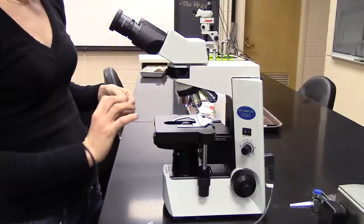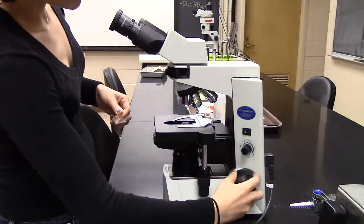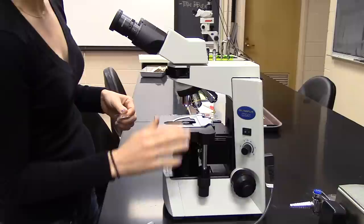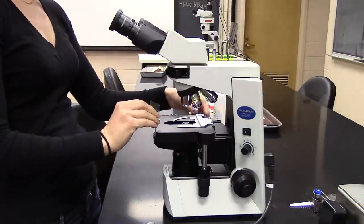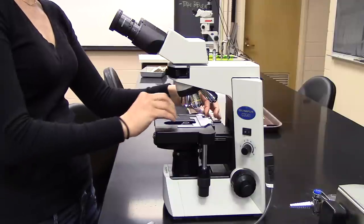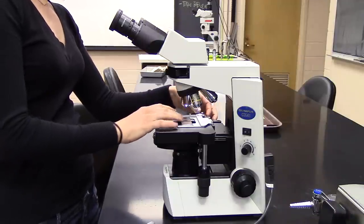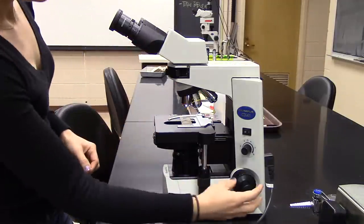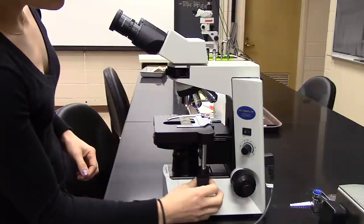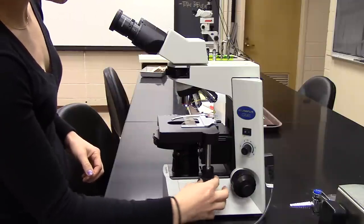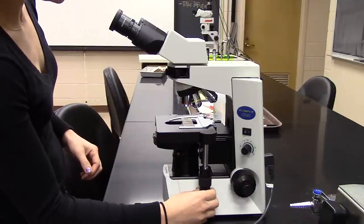First, we'll move the stage all the way down to the lowest setting. Use this little clip here; open it up, put your slide in place, and clamp it shut. Then you use these knobs here: this one moves it forward and back, this one moves the stage left and right. I'll use those to get my X centered over the light source here.